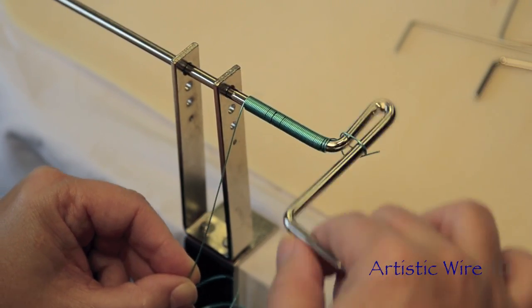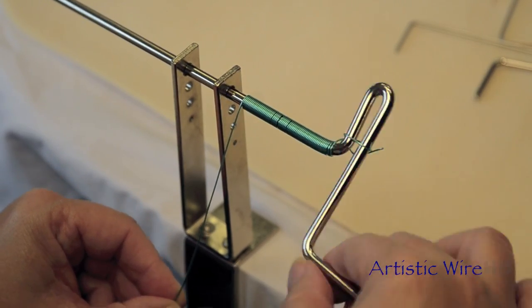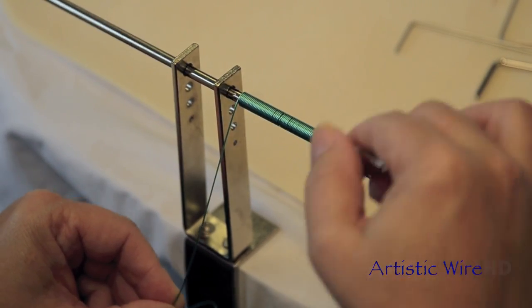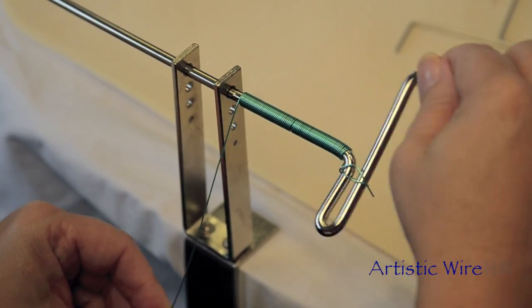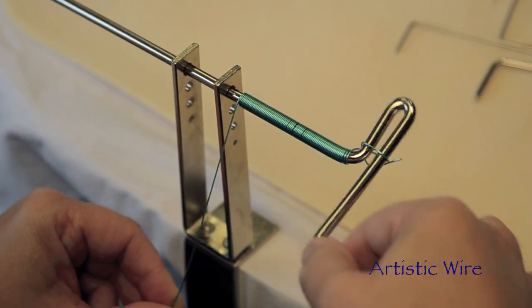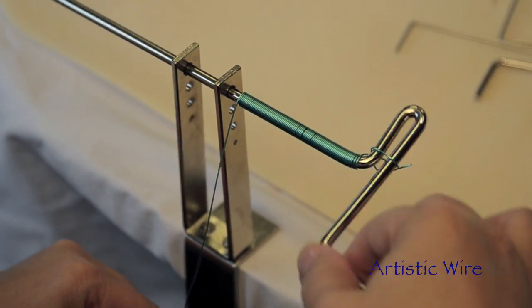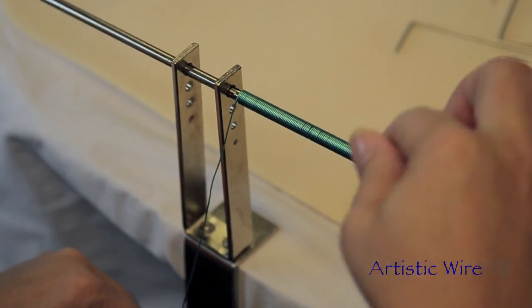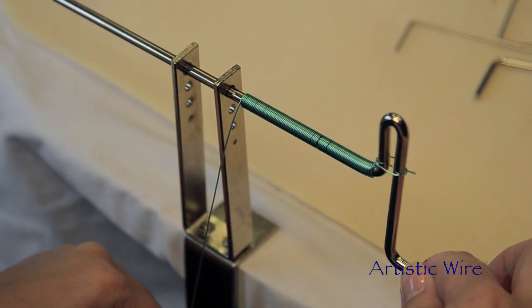And depending on what you're making, that will depend upon how long you will make your coil. Typically, I like to make my coils about two to three inches long. And I do believe that we have a coil that's about two and a quarter. So we'll go ahead and stop.